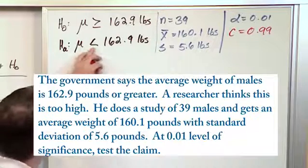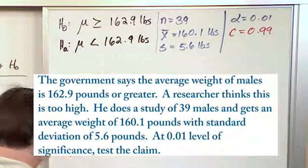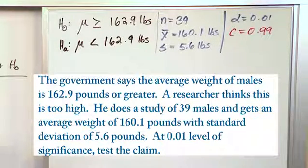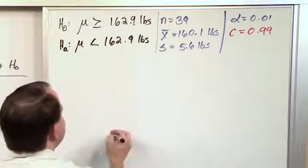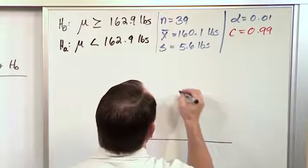Also, because the arrow points to the left, this is going to be a left-tail test. And we're going to be using a normal distribution because he was able to get more than 30 samples. So we don't have to use the T distribution or degrees of freedom or anything like that.